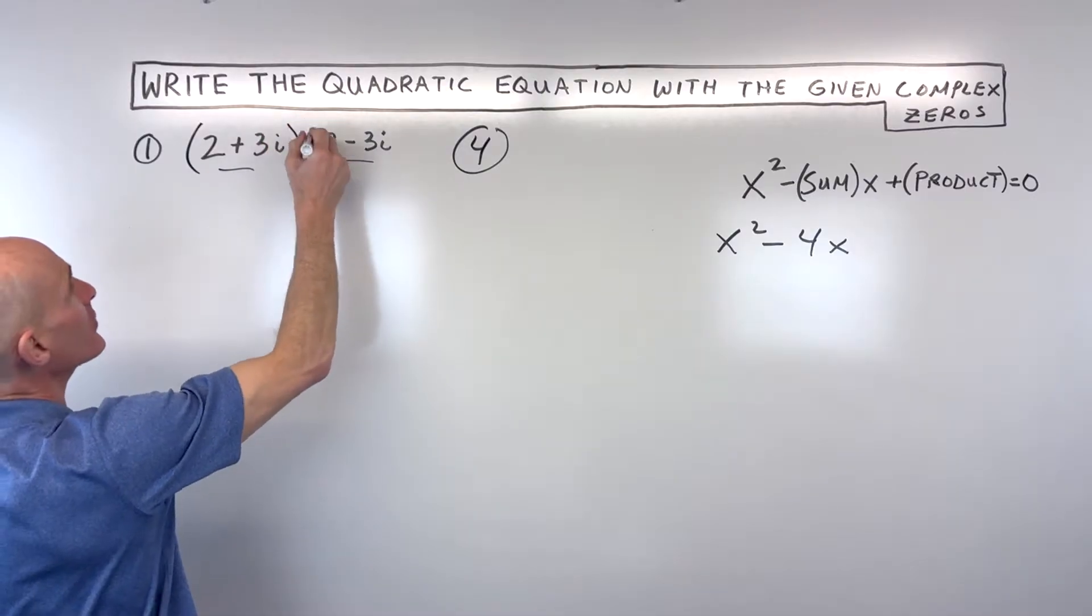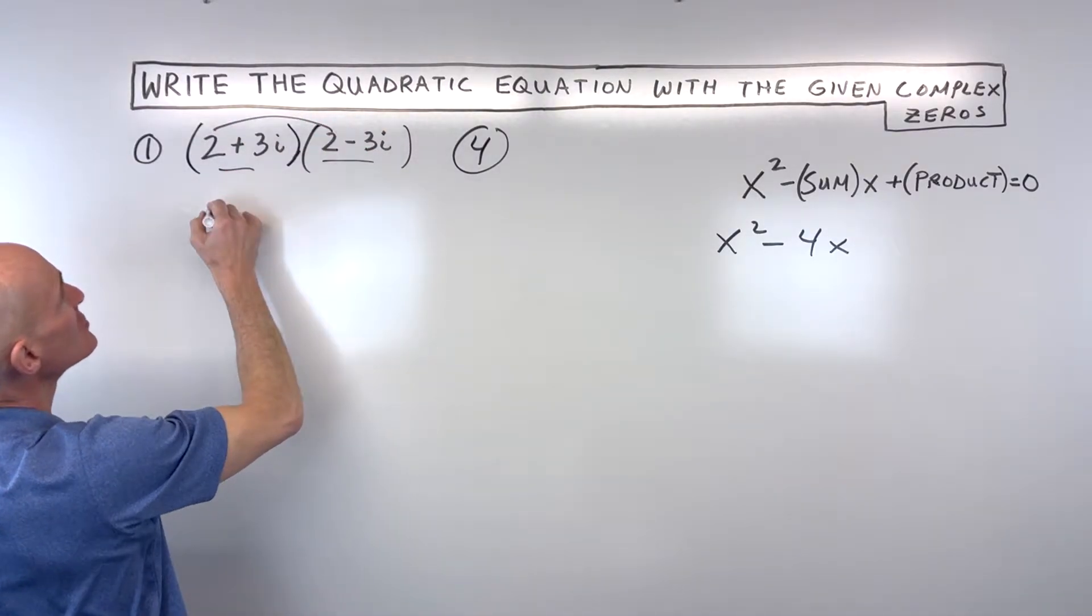Now if we multiply these two together, let's see what we get. We get 2 times 2, which is 4.